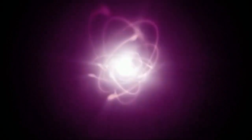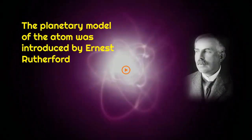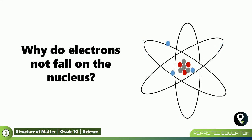If you look at this model very closely, it looks just like our solar system where Earth and all the other planets revolve around the Sun. That is the reason the scientist Ernest Rutherford — who is in the picture — introduced the planetary model of the atom. Now I have a question: why do electrons not fall onto the nucleus?